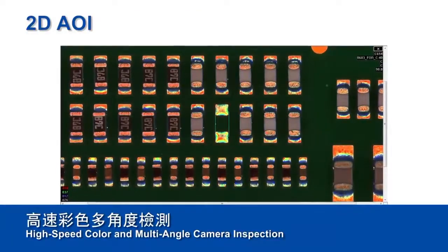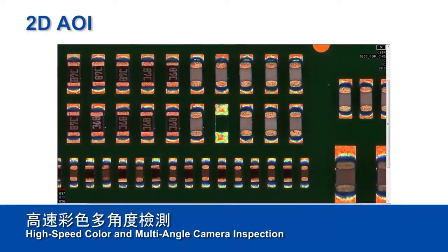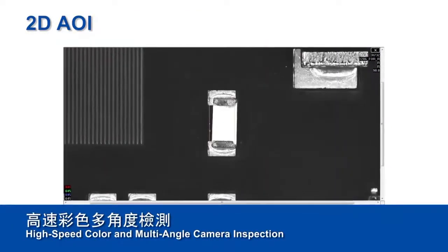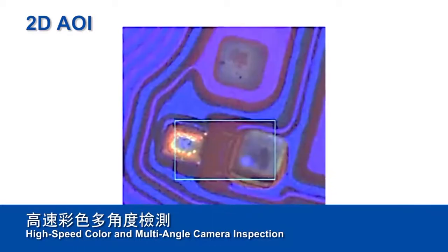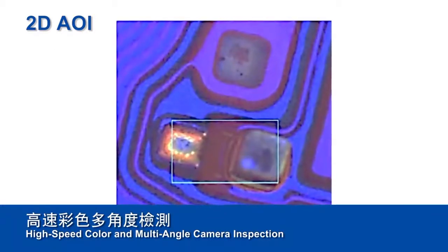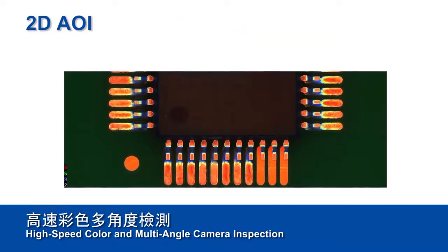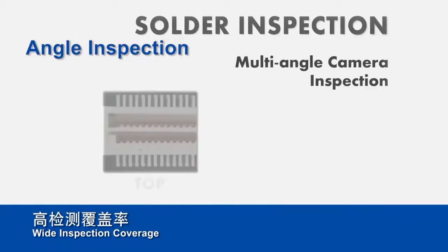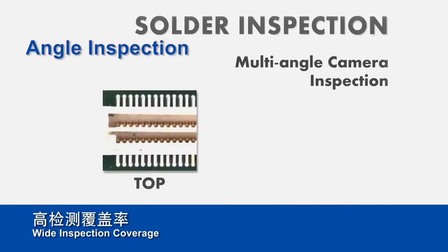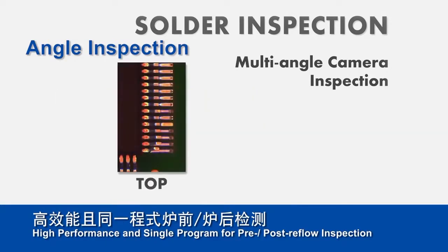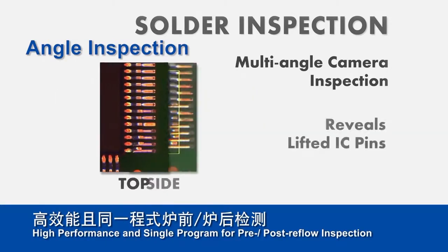2D AOI can identify missing or wrong parts, polarity, placement errors, and open shorts on the PCB. Blind spots and dead angles can be easily inspected using side-view camera AOI systems.